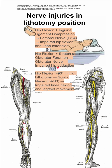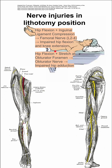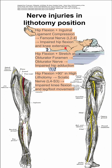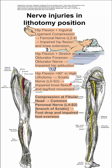Next is hip flexion greater than 90 degrees. If that angle is greater than 90 degrees, you're in a high lithotomy position and can have sciatic nerve injury, which leads to impaired knee flexion and leg and foot movement. Remember, the sciatic nerve runs along the back of your leg and is the larger nerve in your lower extremity.